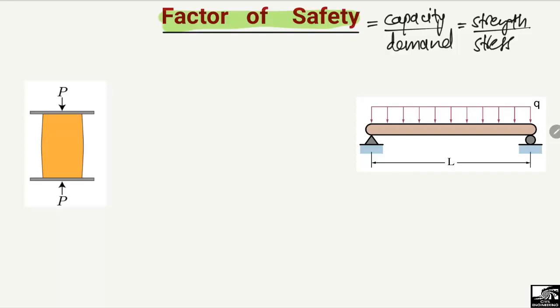Let's explain this with an example. Consider a simply supported beam supported by a hinge and roller support, with a uniformly distributed load Q acting on it. This load is known as the demand on the beam, and the stress due to this load is, let's suppose, 40 kN per square meter.